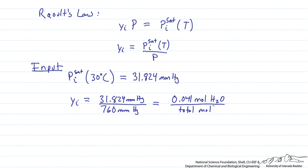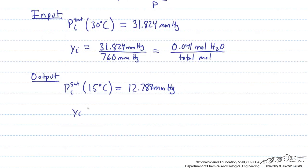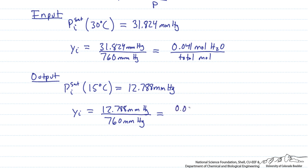Next let's calculate the composition of water in the gas coming out of the dehumidifier. Our temperature has decreased, so we need to find pi sat at 15 degrees Celsius, because the dehumidifier has cooled our system. Going back to table B3 from Felder and Rousseau, at 15 degrees the saturation pressure of water is 12.788 millimeters of mercury. Using the same equation, yi equals 12.788 divided by 760 millimeters of mercury, giving a mole fraction of water in air of 0.0168 moles of water per total moles.